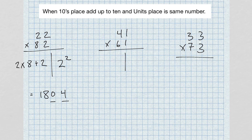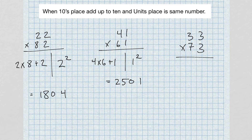Let's try 41 times 61: left-hand side, four times six plus one; right-hand side, one squared. Four times six gives us 24; 24 plus 1 gives us 25. One squared is 1, but we need two digits, so we write 01. Answer: 2501. Final problem, 33 times 73: three times seven plus three on the left; three squared on the right. Three times seven is 21; 21 plus 3 gives us 24. Three squared is 9, written as 09. Answer: 2409.